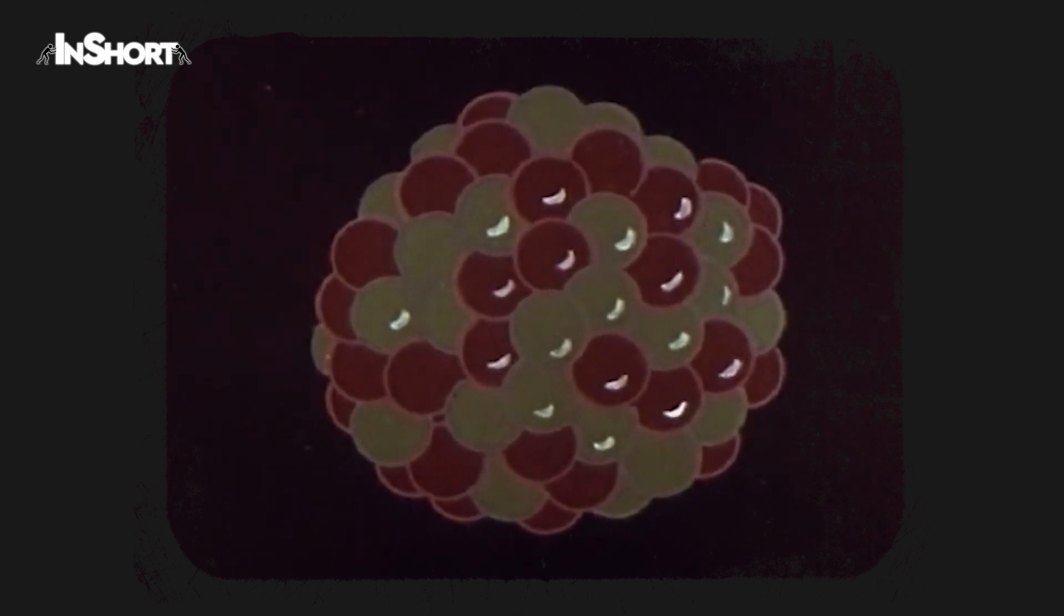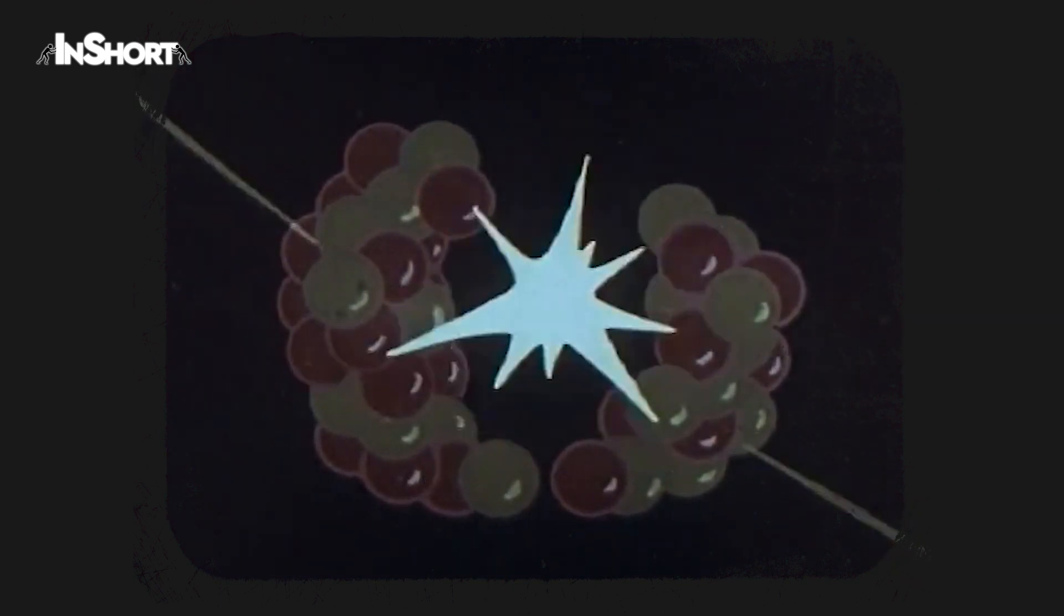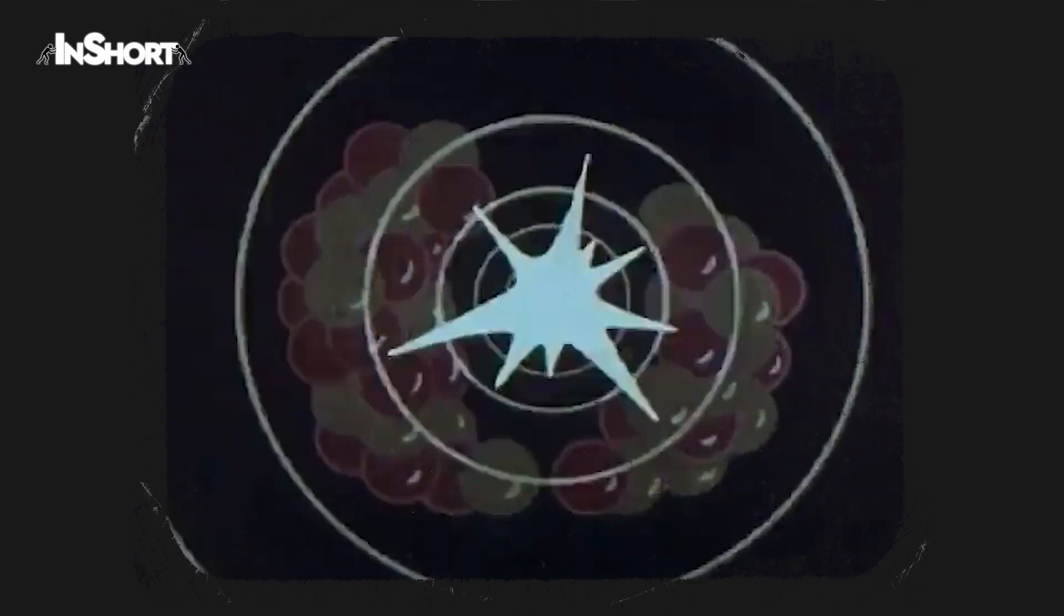When a free neutron hits this nucleus, it splits into two parts, releasing more neutrons which may go on to split other nuclei. The resulting fission products become highly radioactive, emitting the long-range and dangerous gamma rays.